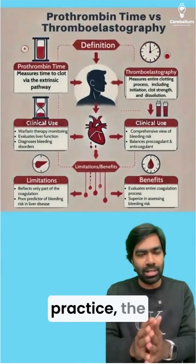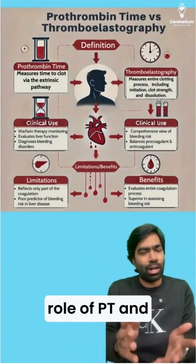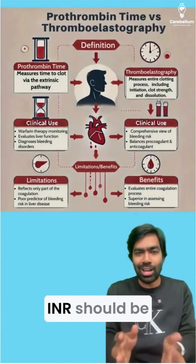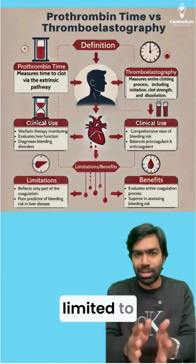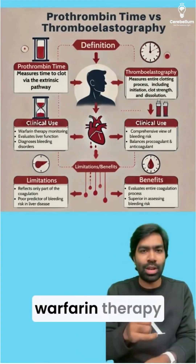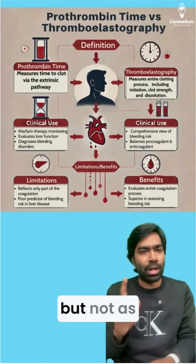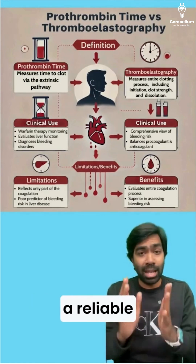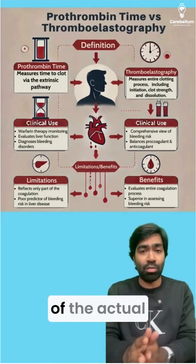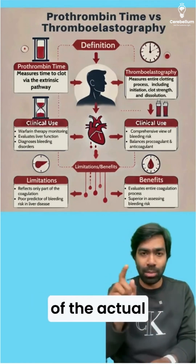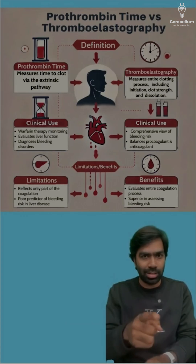So, in modern practice, the role of PT and of course the INR should be limited to monitoring warfarin therapy and determining liver failure, but not as a reliable measure of the actual bleeding risk.